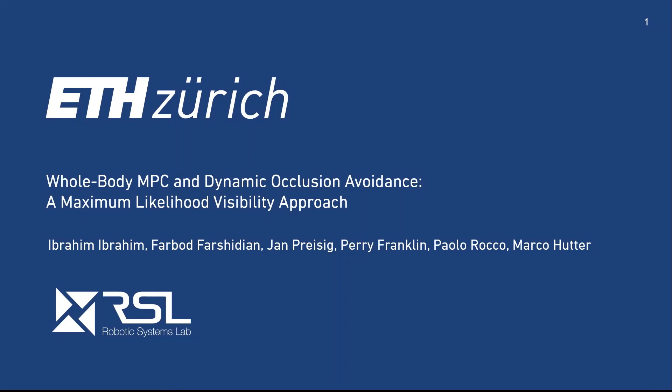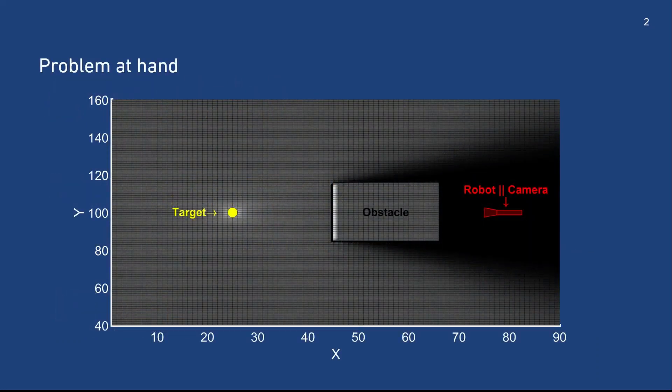We present whole body MPC and dynamic occlusion avoidance: a maximum likelihood visibility approach. Our objective is to obtain robot motions that avoid shadows cast by obstacles which are occluding the line of sight between the target and the robot.